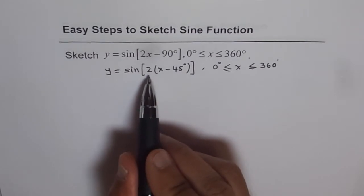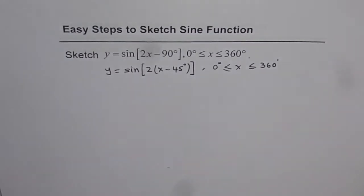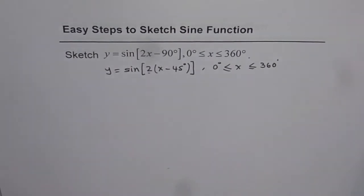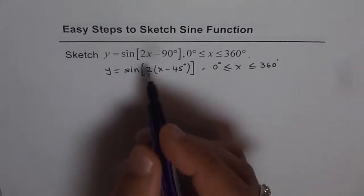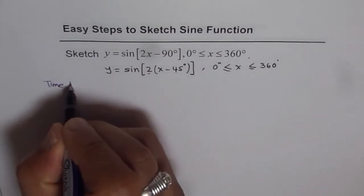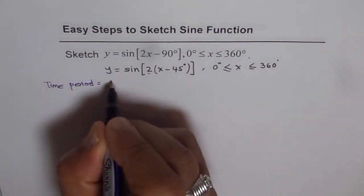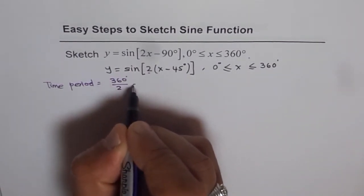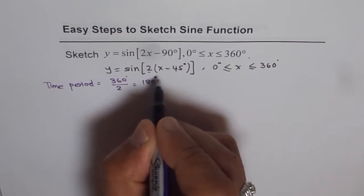Now from here we can summarize what do we expect. We expect 2 waves. Sine 2 means 2 waves. And that also means that the time period is going to be 360 degrees divided by 2, that is 180 degrees.